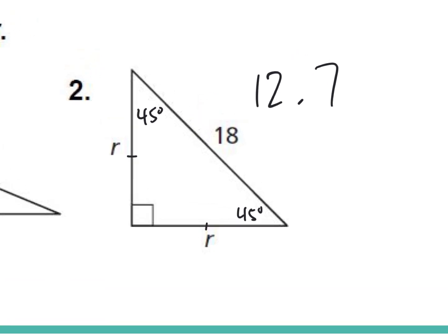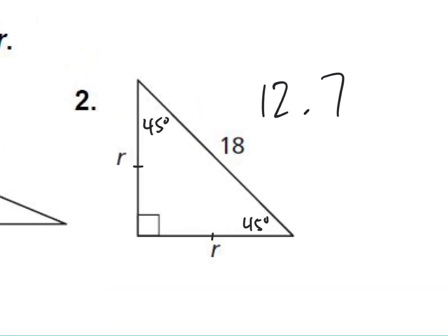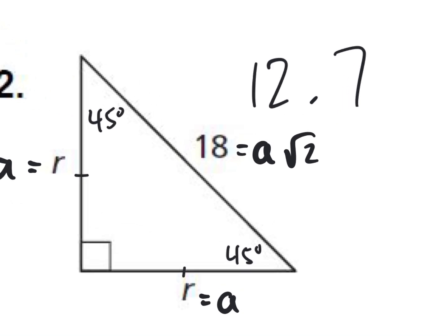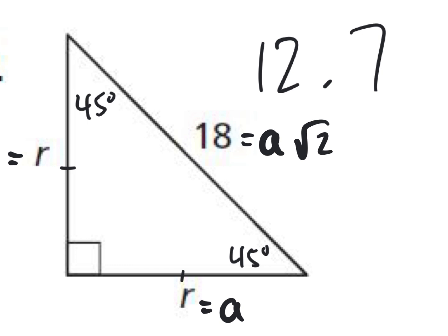Because this is a 45-45-90, that makes each of the legs little a's. Do you guys remember that? Little a, little a. And the hypotenuse is little a times the square root of 2. Now let's solve, because they gave us the hypotenuse was 18. Let's solve for little a in the hypotenuse. How would you solve for little a?